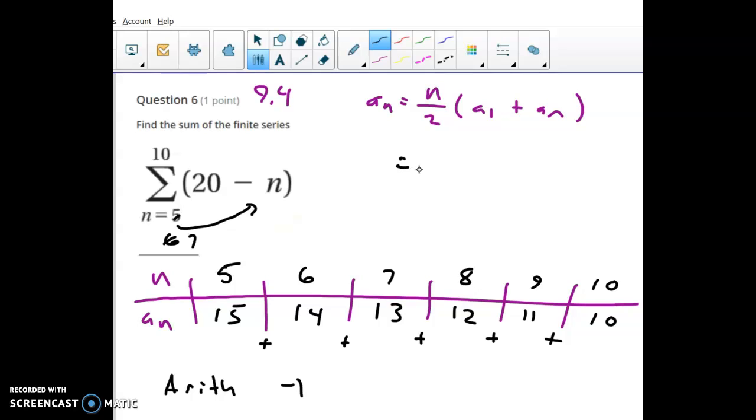All right, and so how many terms we have is I think there's actually 6. It kind of seems like there would be 5 if you did 10 minus 5. It should be 5, but actually if you count them, there's 1, 2, 3, 4, 5, 6 terms.